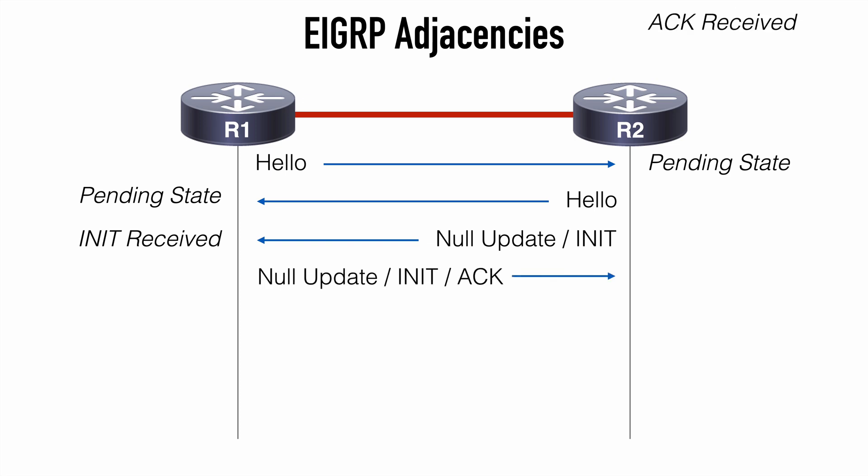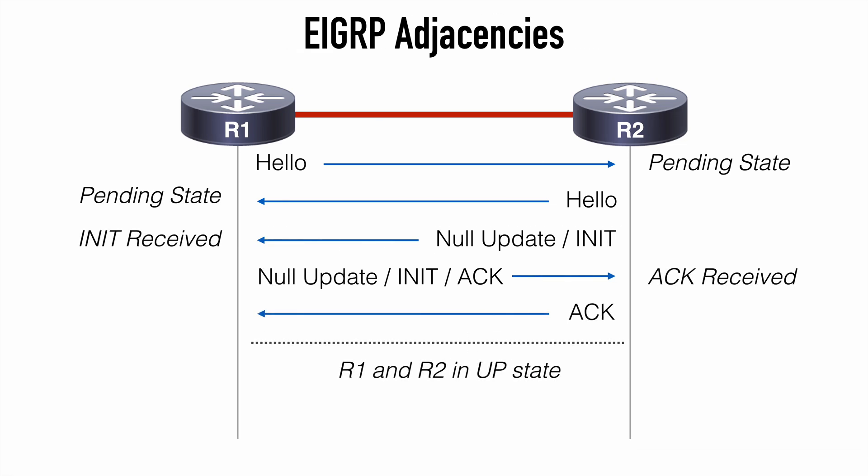R1 is required to acknowledge the receipt of this null update, and it sends back its own null update with its own init flag set. There's also an acknowledgement sent between the routers confirming that a new neighbor adjacency formation is taking place. At this point we are still in the pending state, and the only packets that can be exchanged during this state are hello packets, acknowledgement packets, and packets with the init flag set. After this, R2 responds with a final acknowledgement message for the null update from R1, and both routers move into the up state where an EIGRP adjacency is successfully formed.